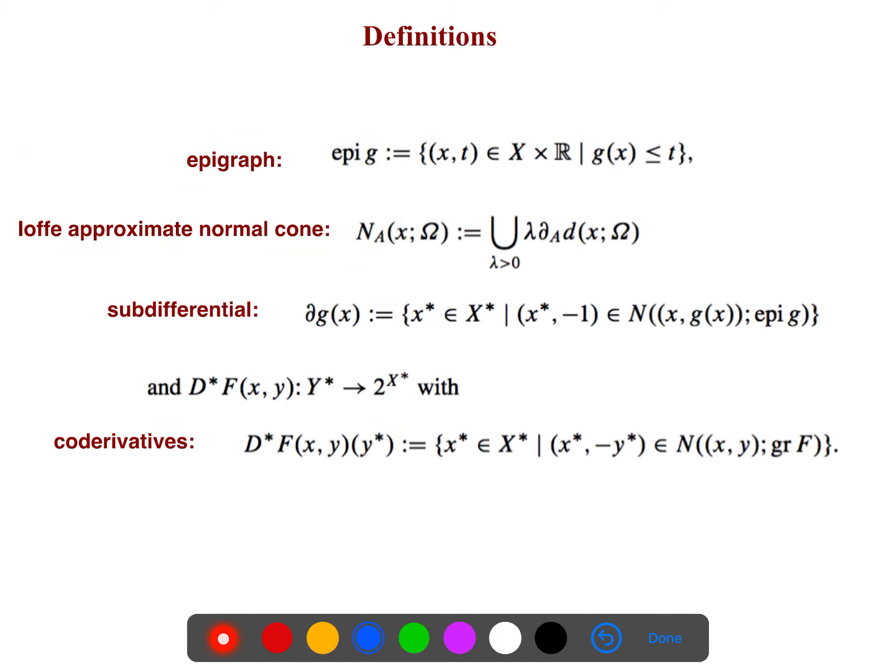And we need some other definitions, such as epigraph, approximate normal cone, which is an Ioffe approximate normal cone, is a kind of normal cone, and also sub-differential and co-derivative.